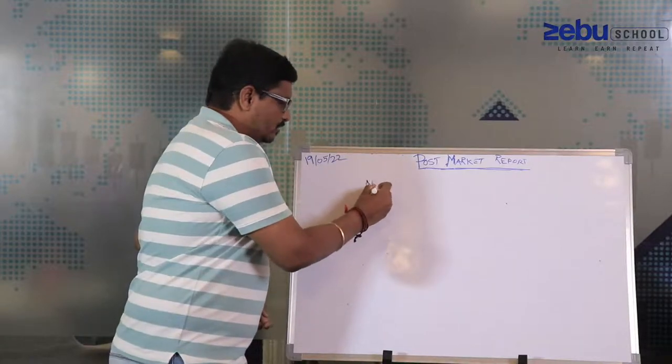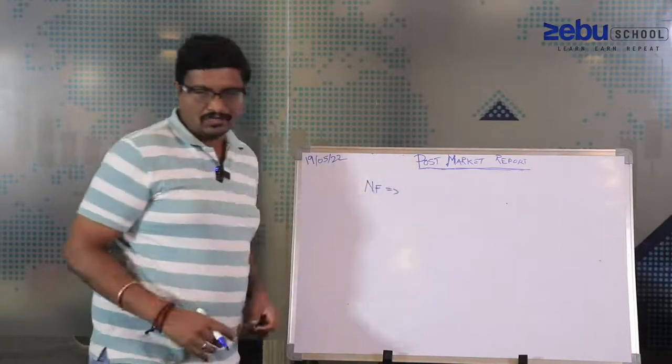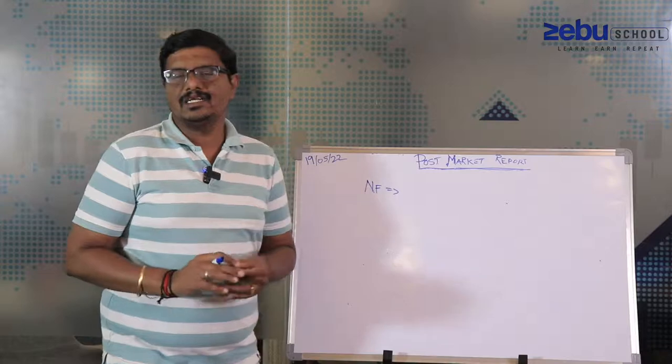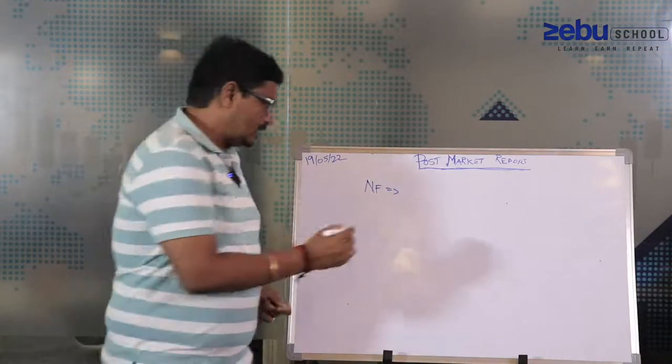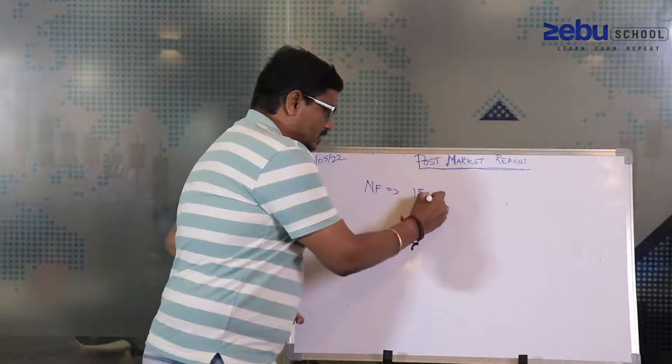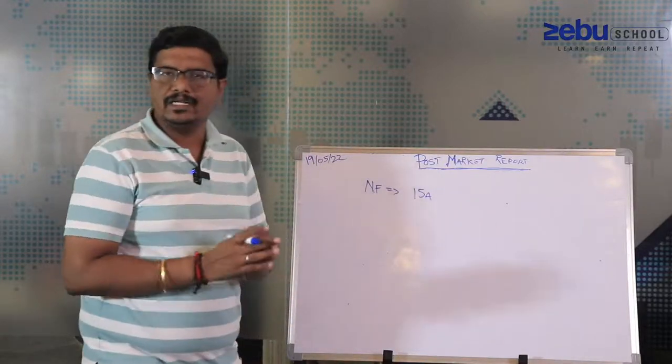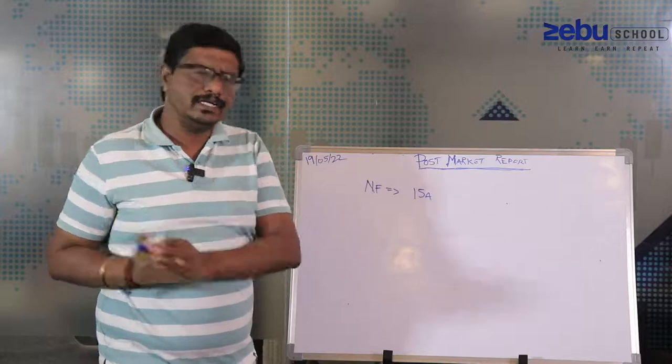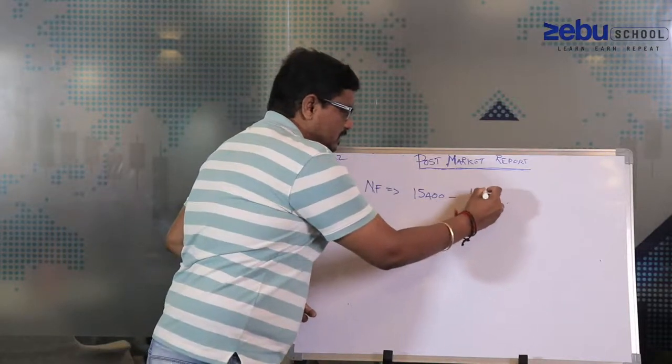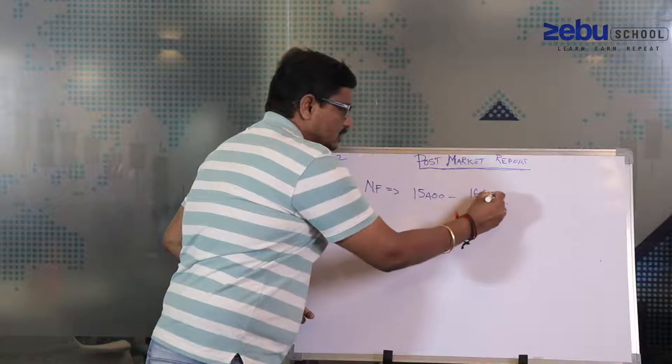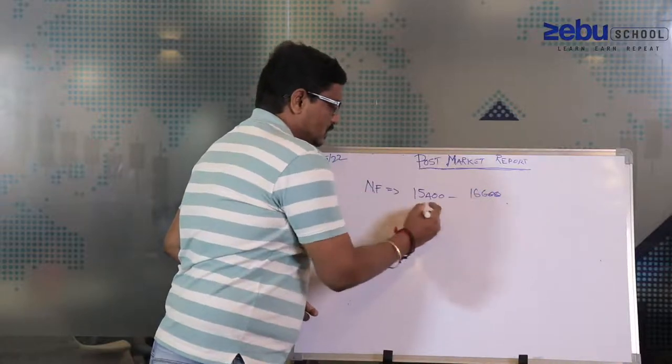From here on, what is the key level for Nifty? If you ask me the broad range, as of now unless there are new negative triggers, I expect market to trade in range. You can assume for the next 20 to 30 days, safely this is the range I'm expecting: 16,600.